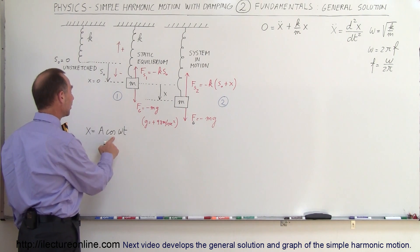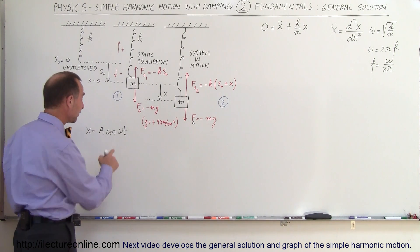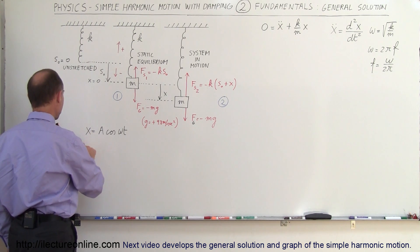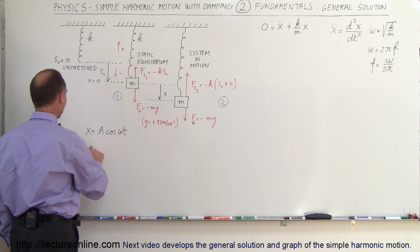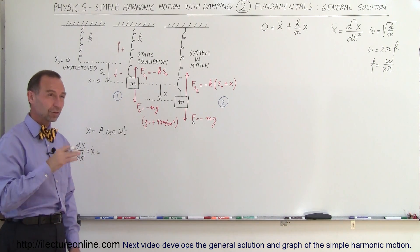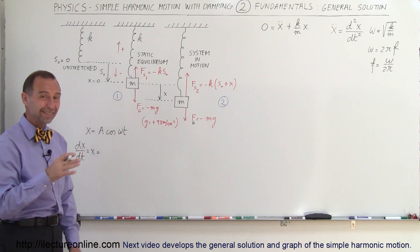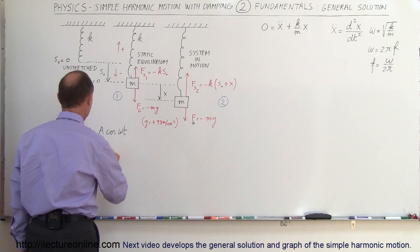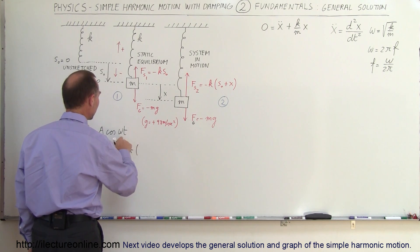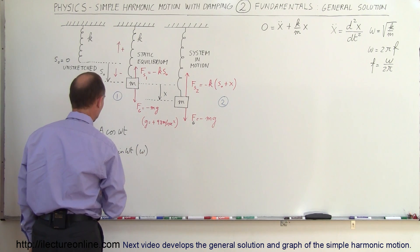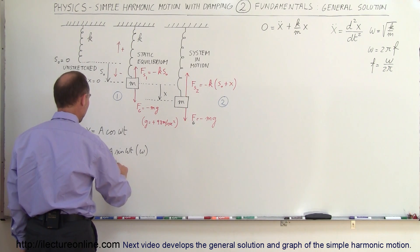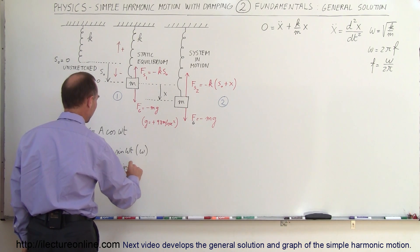If we let x equal a times the cosine of omega t, and now take the first derivative with respect to time, let's see what we get. dx/dt, which can be written as x-dot, is the derivative of that. The derivative of cosine is negative sine, so that gives us minus a times the sine of omega t, times the derivative of the angle which is omega. So x-dot equals minus a·omega times the sine of omega t.